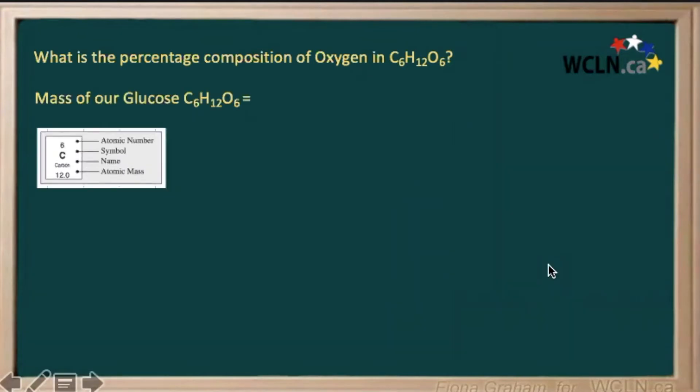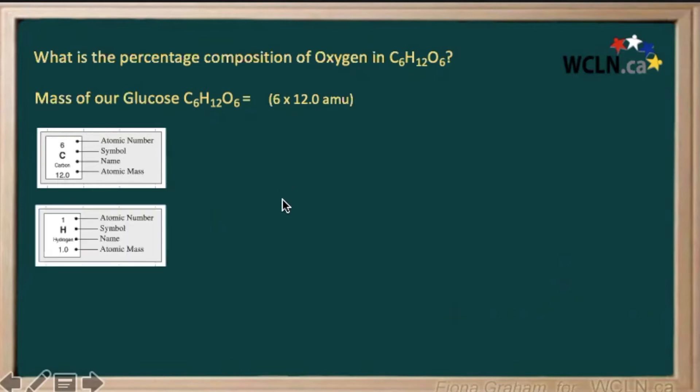So we know we've got some carbon right here, and we have six carbons, and carbon has an atomic mass of 12, so 6 times 12. Our hydrogen has an atomic mass of 1, and we have 12 hydrogen, so we would add to our carbon total 12 times 1 to get our hydrogen total.